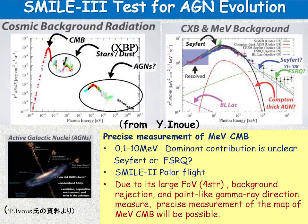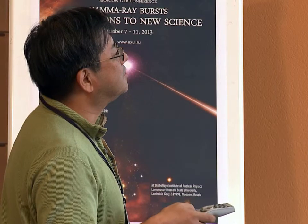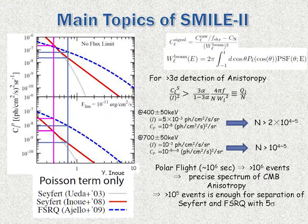After SMILE-2, if we achieve the expected data, we consider a polar circle or Arctic northern polar flight, in which case we can observe for more than two weeks. The main target is the precise measurement of the cosmic gamma-ray background spectrum. COMPTEL observed for 8–9 years but errors are quite large because this gamma-ray comes from all directions, making it very difficult to estimate background with large systematics. But ETCC dramatically reduces background, making it a quite good target. Also, in collaboration with Dr. Inoue, we expect about 5-sigma separation to determine which AGN type contributes dominantly to this field — whether it is flat-spectrum radio quasars or Seyfert-type AGN.